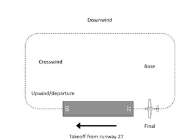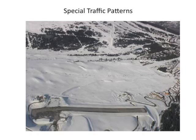So those are the four basic legs of a traffic pattern, and that's all you need to know for most airfields — pretty much all of them. You should integrate into downwind, and most controllers will make you integrate there. You can integrate into other legs if you want, except of course the departure leg. It's recommended to integrate into downwind because that way you get a good visual of the airfield. Some airfields have patterns that are a bit different.